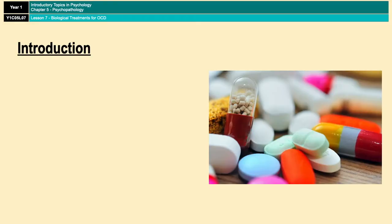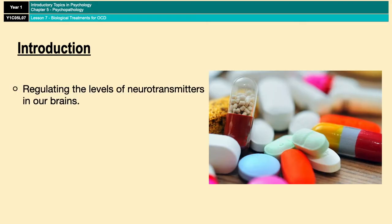Drug therapies assume that symptoms of mental health conditions are brought about by abnormal levels of certain chemicals in our brains. For OCD, the chemicals we're specifically going to be talking about are neurotransmitters. The aim of drug therapies for OCD is to regulate abnormal levels of neurotransmitters in our brains. In this video we're going to be talking about two different types of drug therapy that can be used for OCD.